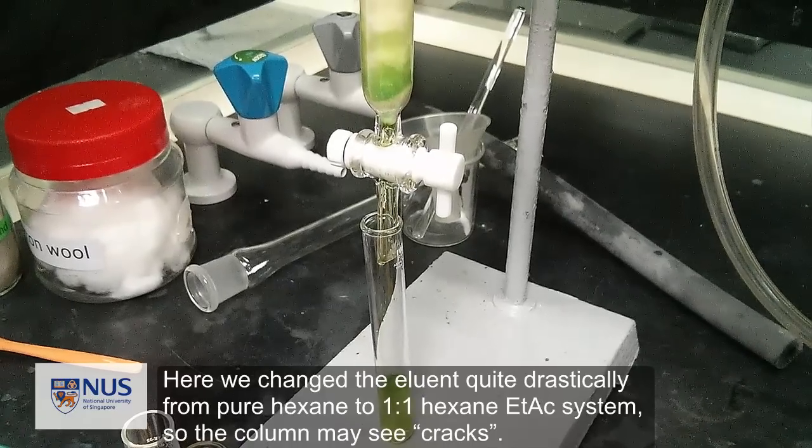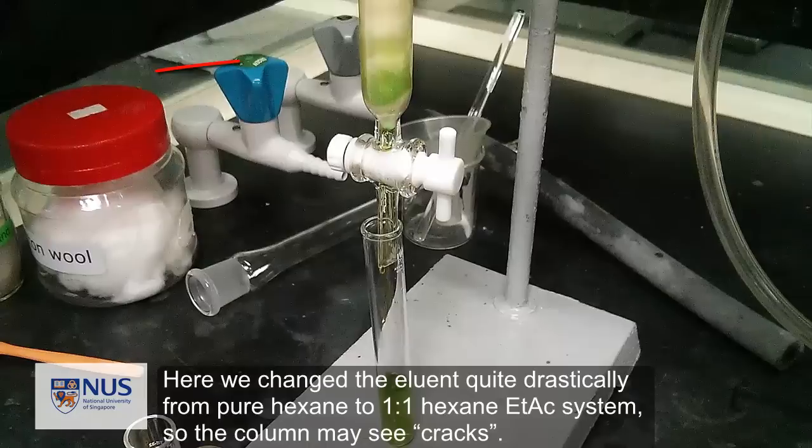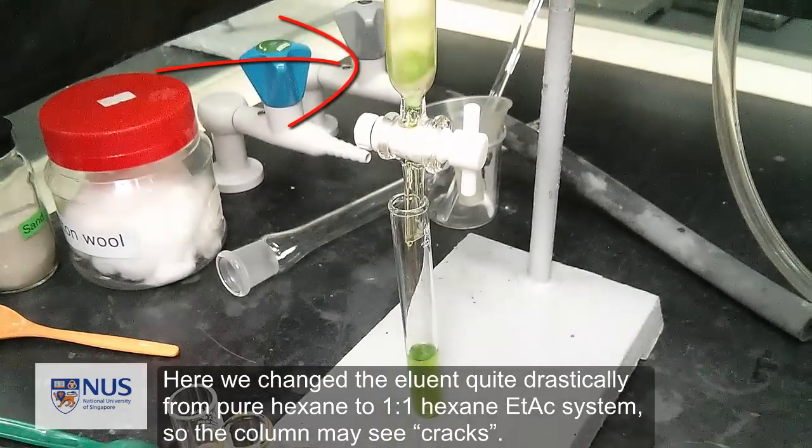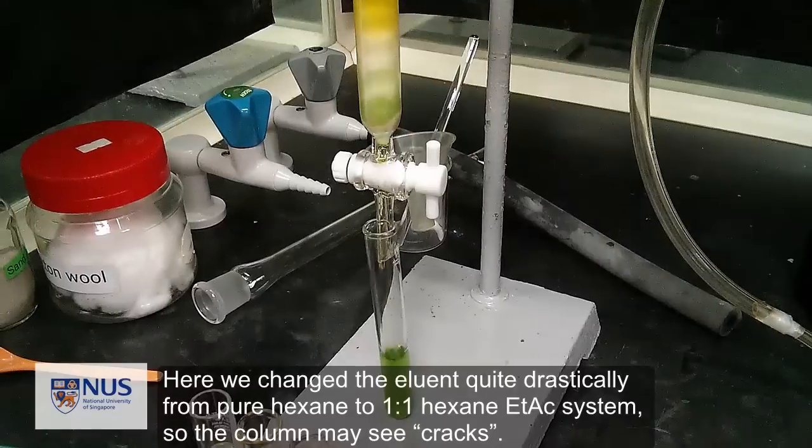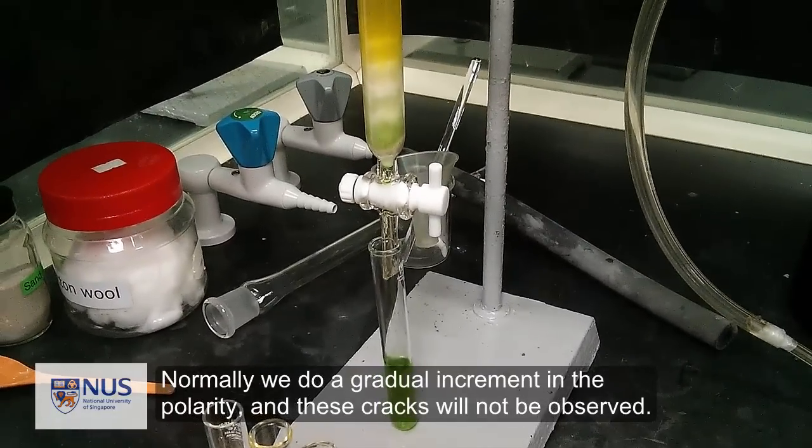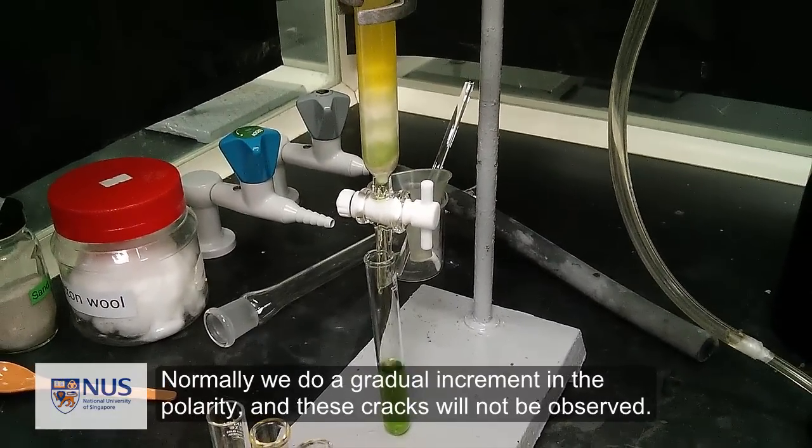Here we change the eluent quite drastically from pure hexane to a 1-to-1 hexane ethyl acetate system, so the column may see some cracks. Normally we do a gradual increment in the polarity, so these cracks should not be observed.